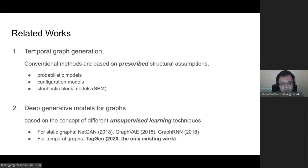Related work includes temporal graph generation. In general, like conventional methods, they are based on prescribed structure assumptions such as probabilistic configurations and stochastic block models. SBM is quite famous. The second part is the deep generating model for graphs. However, most of such models are based on the concept of different supervised learning techniques for graphs, but most current work is for static graphs. Until this work, there's only one work taken into 2020 for temporal graphs.